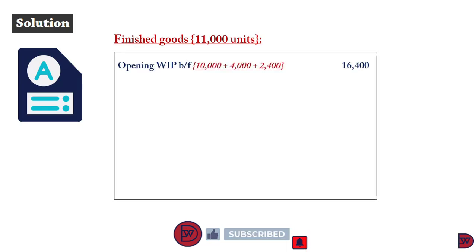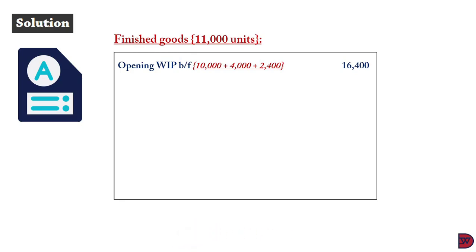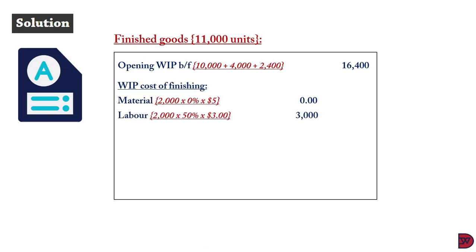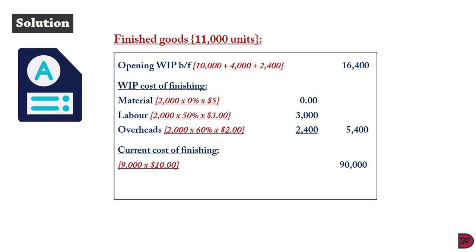For the finished goods cost, the opening WIP of 11,000 units had a value of $16,400 — comprising $10,000 for materials, $4,000 for labor, and $2,400 for overheads. The additional cost to finish the opening WIP: zero for materials (fully processed), $3,000 for labor (50% of 2,000 units at $3), and $2,400 for overheads (60% of 2,000 at $2). Total cost to finish opening WIP is $5,400. The current cost for the 9,000 fully completed units at $10 each is $90,000. The total finished goods cost is $111,800.